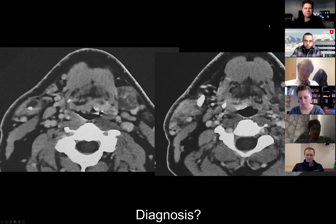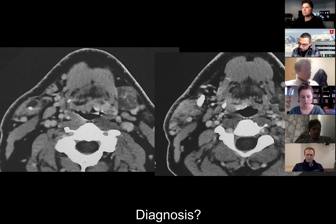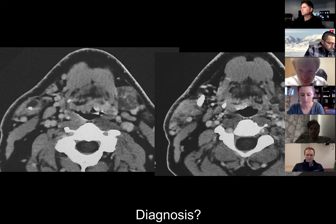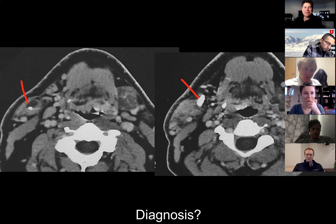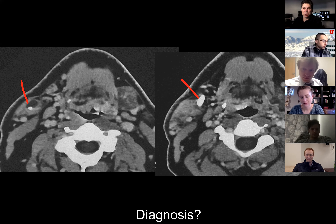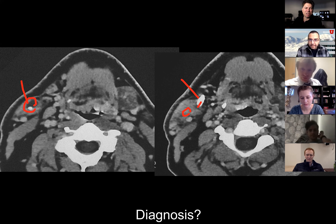CT neck with contrast. Is it the right submandibular gland with a sialith and ductal dilation? Yes. We have high density on that side. On the ABR they love to talk about submandibular duct stones — about 65% are within the gland itself or within the proximal duct. You may get intraductal dilatation of those lesions. They can be seen anywhere along that course — in the sublingual space when we think about the oral cavity.